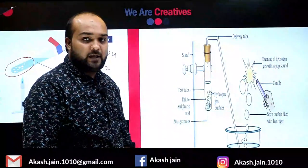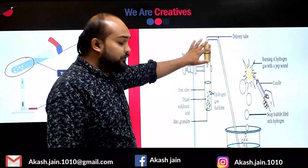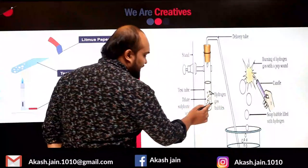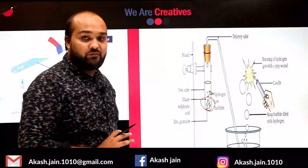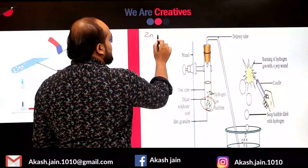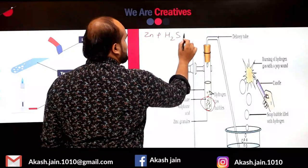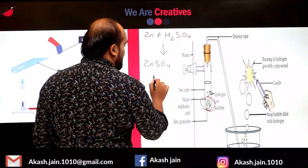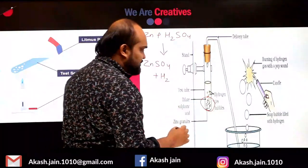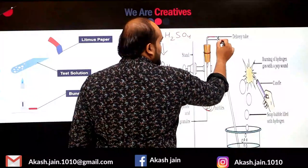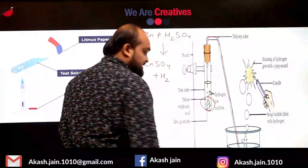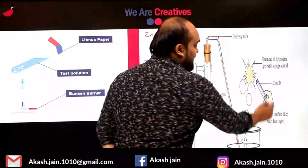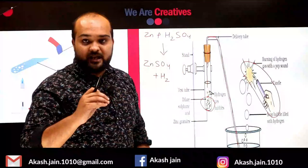Here is a figure: we have zinc granules in a test tube with dilute sulfuric acid. The reaction is Zn + H₂SO₄ → ZnSO₄ + hydrogen gas. The hydrogen gas escapes from the test tube through a funnel into soap solution, forming bubbles. When the bubbles are ignited, you hear a pop sound — this is the test for hydrogen gas.